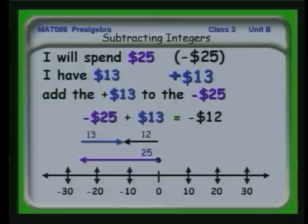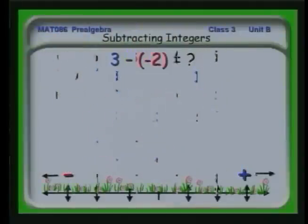Again, you can think of it as adding a negative number on the number line, exactly as we've done in the previous unit, except now we're adding negatives as well as positives. Ordinary subtraction is the same as adding a negative number on the number line. Let's extend the idea a little bit.